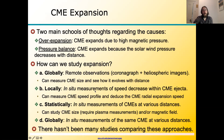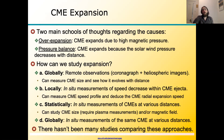Let's talk about coronal mass ejection expansion. There are two main schools of thought regarding what causes this expansion. It could be that the CME is over-expanding, meaning it has such high magnetic pressure inside that it pretty much over-expands. Or it could be a pressure balance: as the CME propagates outward, the total pressure of the solar wind decreases with distance, so the CME expands to stay in equilibrium — much like a balloon moving up in the atmosphere.